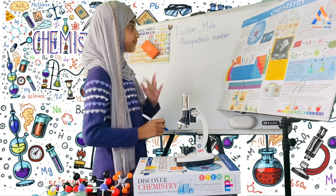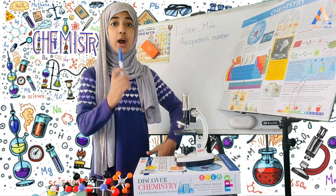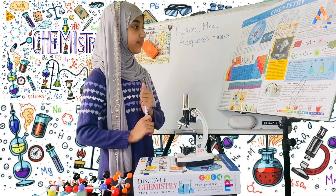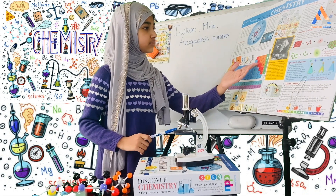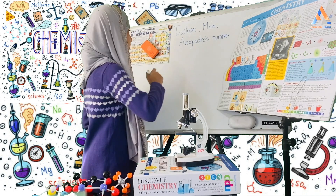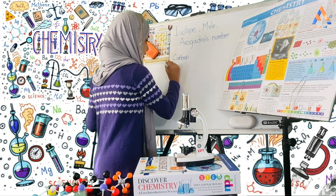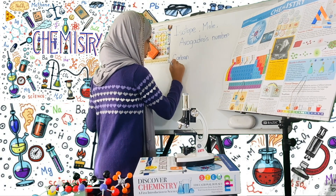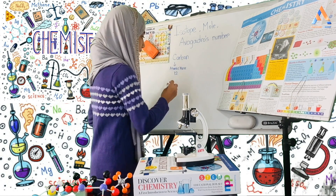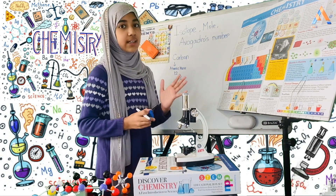I'll start with the isotope. The isotope has a very simple meaning — it means that there can be one or more types of an element. For example, for carbon, usually the atomic mass is 12, but sometimes the atomic mass can also be 13. This is basically an isotope.